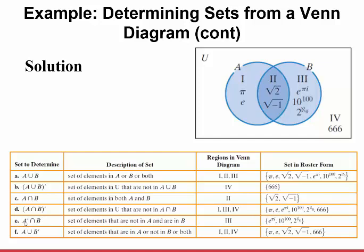The complement of A intersection B — everything not in list 2 — would be lists 1, 3, and 4. The complement of A, intersected with B: not in A means lists 3 and 4, but in B means just list 3 — those three numbers. A union B complement — elements in A or not in B: elements in A are lists 1 and 2, and not in B is list 4, so together that's lists 1, 2, and 4. The visual Venn diagram helped us find all of these.